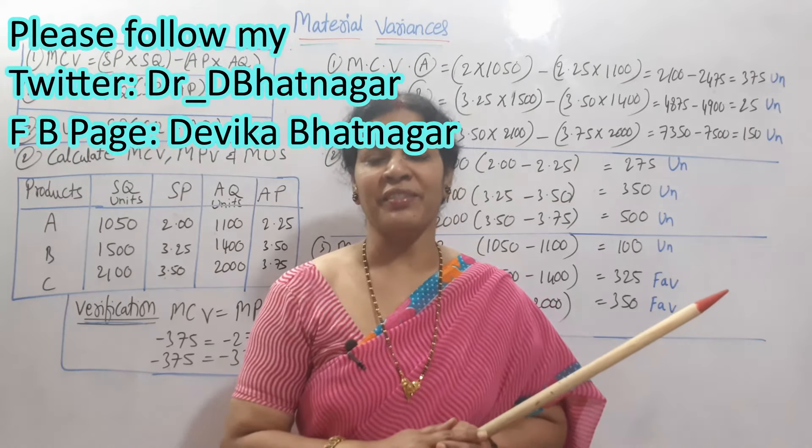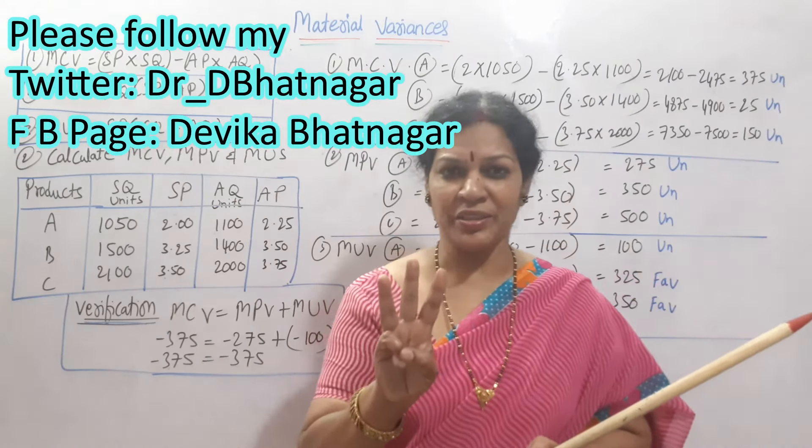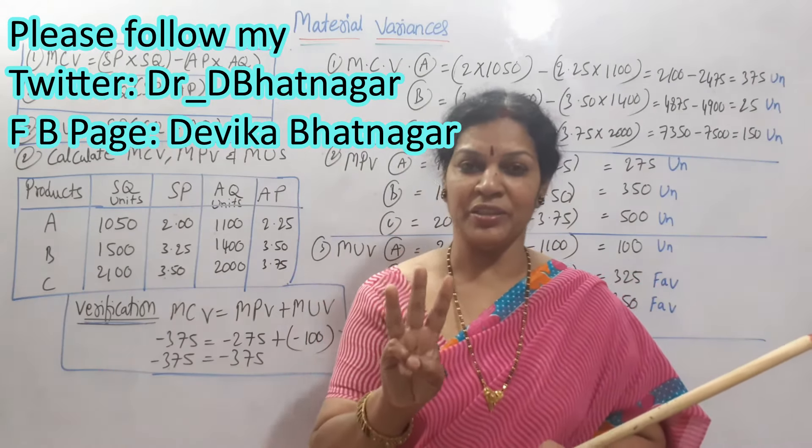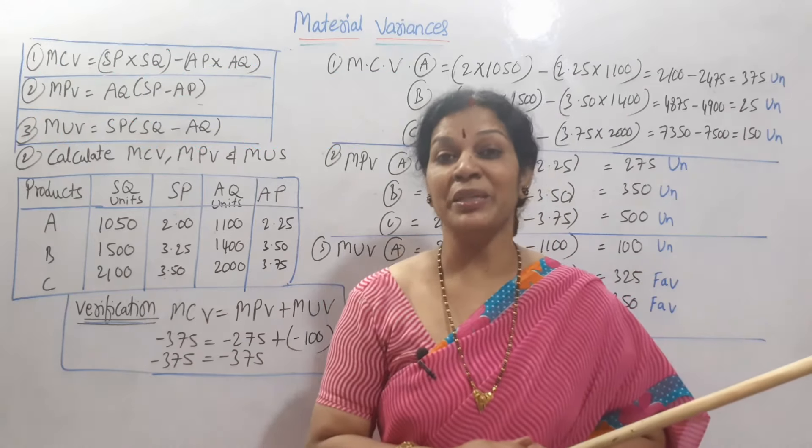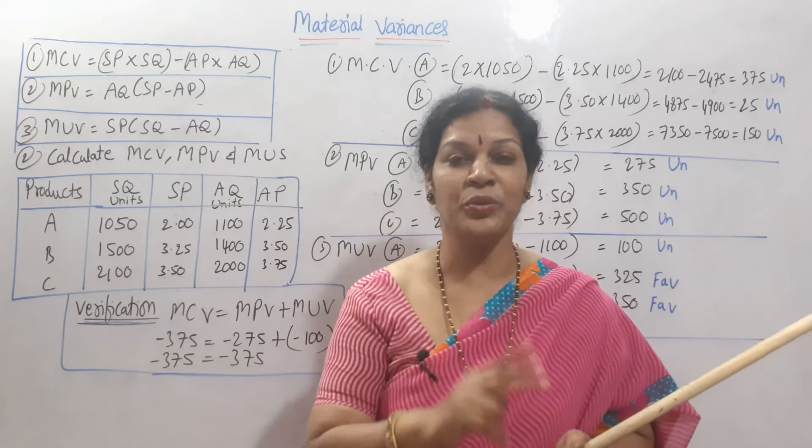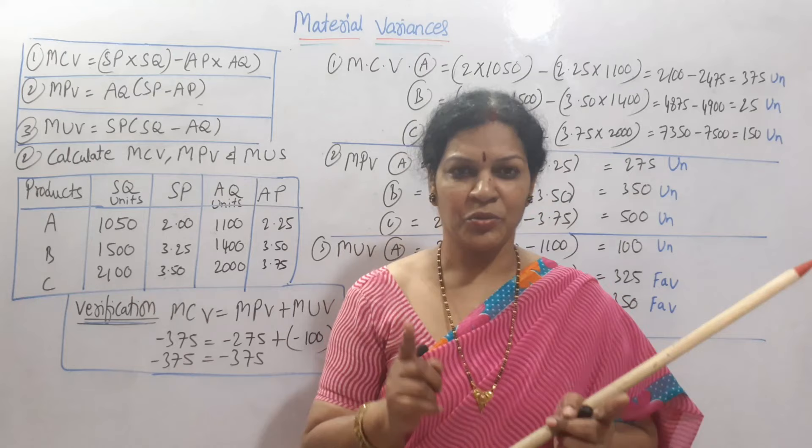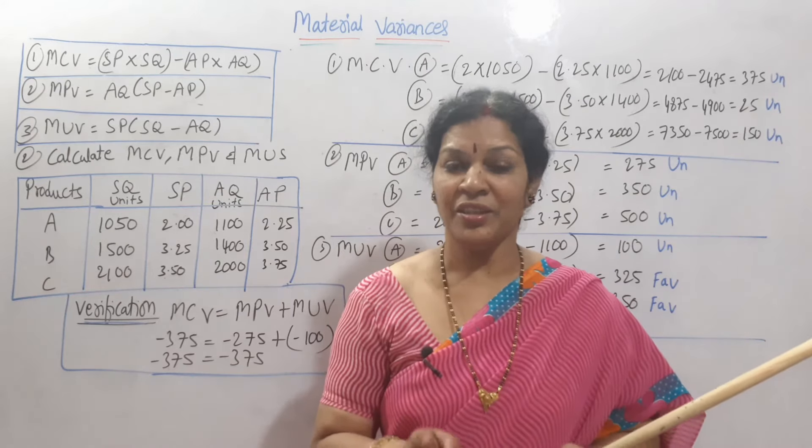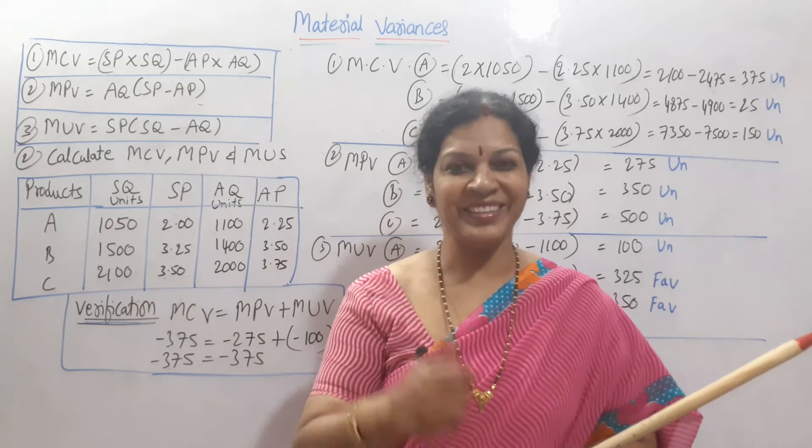So, in the coming class, the rest of the two ratios will see. We have seen only three: material cost, material price, material usage. Coming class, we will see material mix and material yield. These two ratios, if you complete, material variance is over. Stay connected. Check out the playlist. Use it and forward these videos. Have a bright career. Good luck.